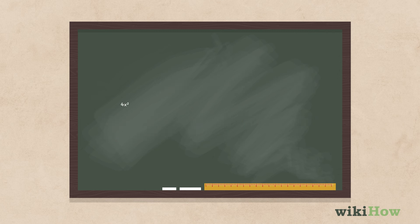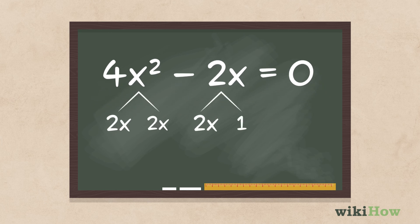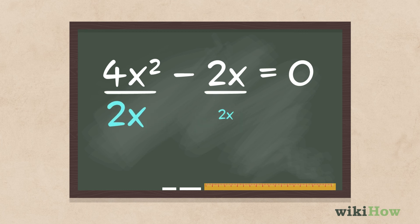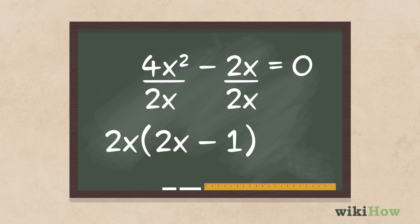If the equation contains variables that are common factors in multiple terms, you can factor those out as well. For instance, in the equation 4x squared minus 2x equals 0, each term contains the common factors 2 and x. To factor the left side of the equation, divide each term by those factors to get 2x(2x minus 1) equals 0.